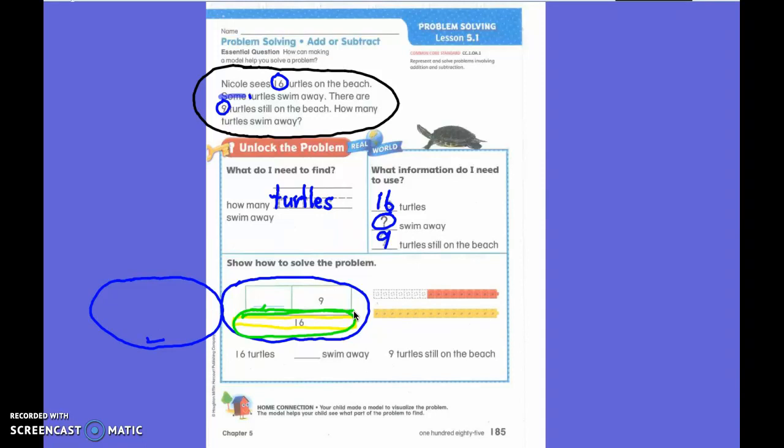So nine is a fairly big size number too isn't it? So if I have nine it's going to take up quite a bit of chunk of the sixteen. So then I have this many left to figure out how many more I need to get sixteen. Do you see what we are doing today?